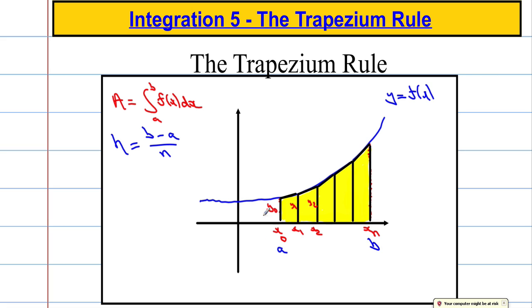So h is the distance between each strip — the width of each strip. We subtract the first x-ordinate from the last: b minus a, divided by n, and that gives us h. So h equals (b − a) / n.